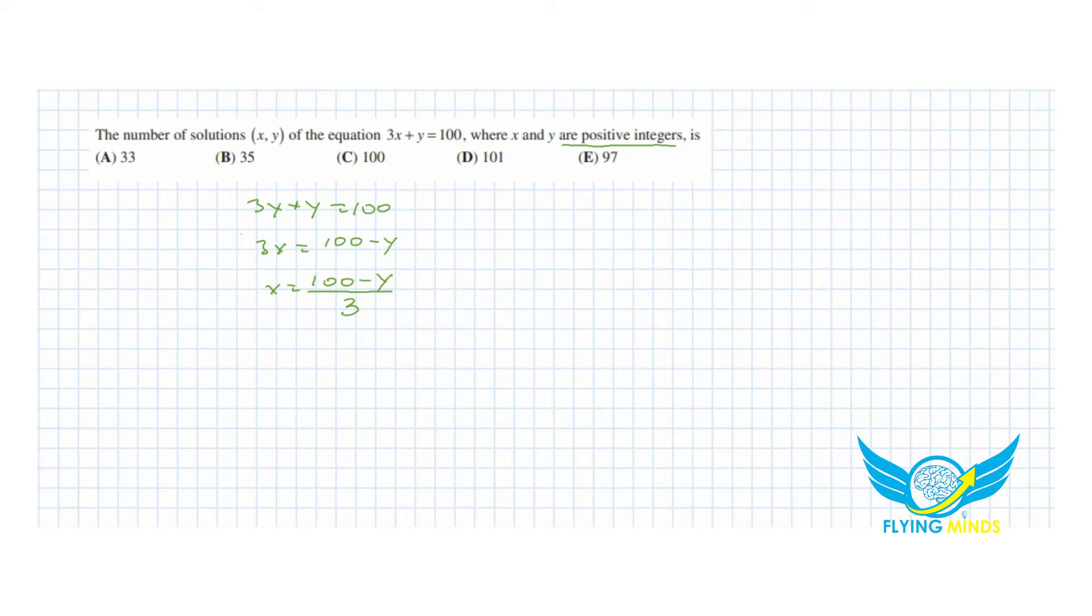I underlined the words that x and y are positive integers. So they must be integers, and the second fact we see here is that 100 minus y must be divisible by 3.